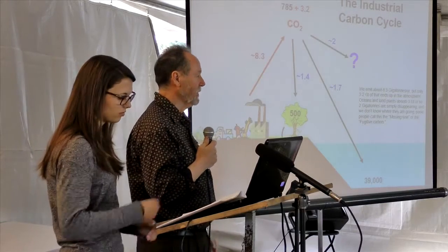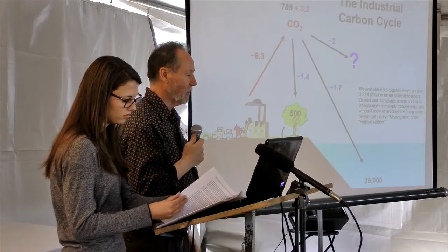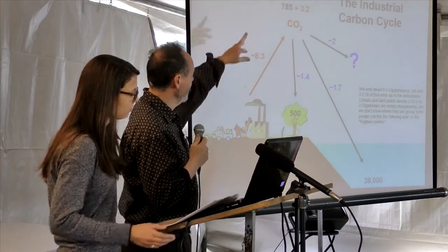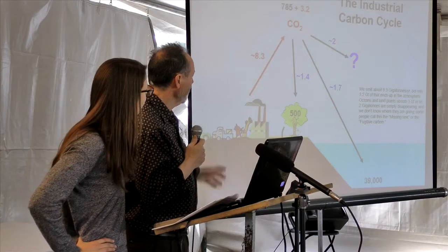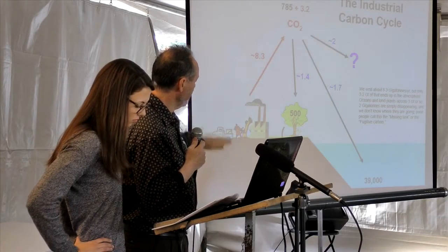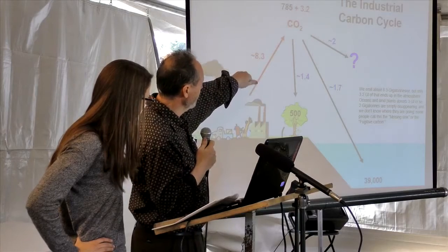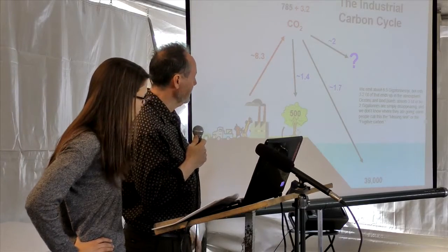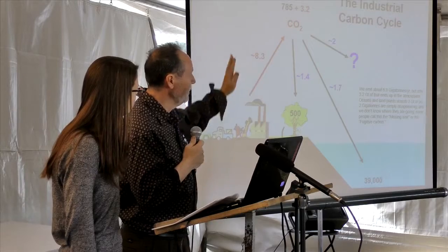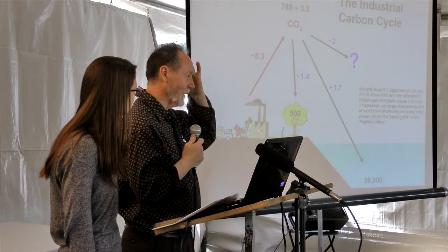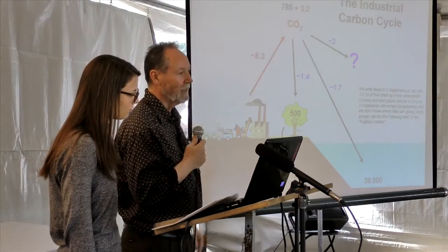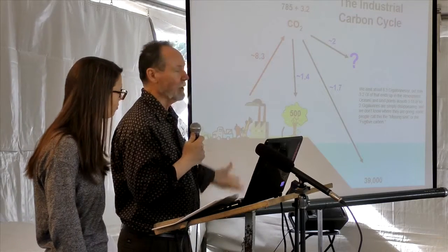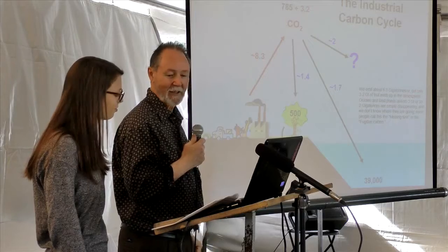This is our current situation with the industrial carbon cycle. We're increasing carbon at about 3.2 gigatons every year. We've got contributions from all of our human activity of around 8.3 gigatons going in. The land masses are absorbing around 1.4 gigatons, oceans a bit more at 1.7. We even have fugitive carbon — the scientists don't even know where another two gigatons is going — but the bottom line is 3.2 is added every year, and the connection with global warming is pretty well settled these days.